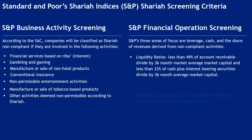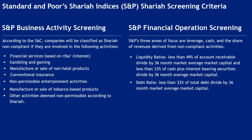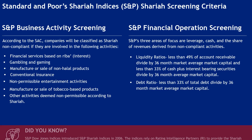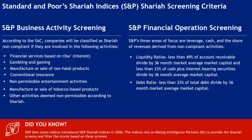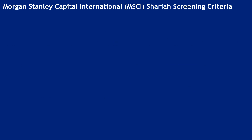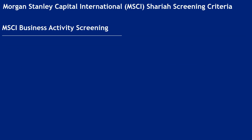S&P Financial Operations Screening. Liquidity ratios: less than 49% of accounts receivable divided by 36-month average market capitalization, and less than 33% of cash plus interest-bearing securities divided by 36-month average market capitalization. Debt ratio: less than 33% of total debt divided by 36-month average market capitalization. S&P Dow Jones Indices introduced S&P Shariah Indices in 2006, relying on rating intelligence partners to provide the Shariah screens.